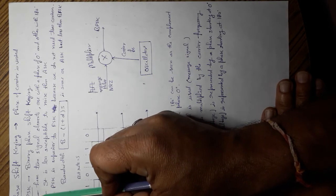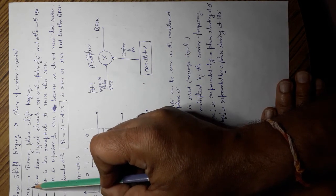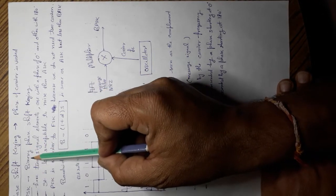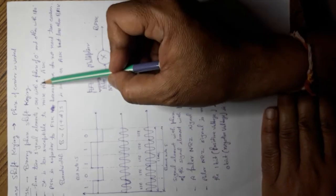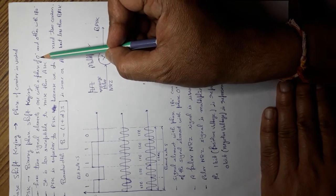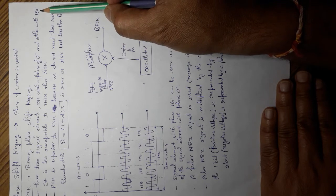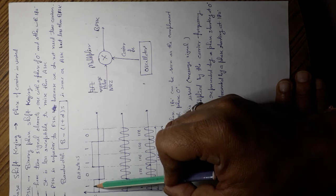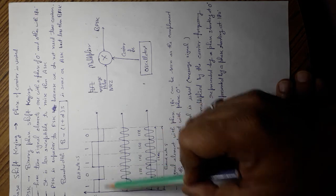In BPSK, binary phase shift key, we are going to have two levels as it is binary: one with phase 0 degrees and other with phase 180 degrees, one with 1 and other with 0.